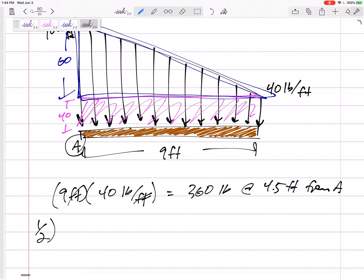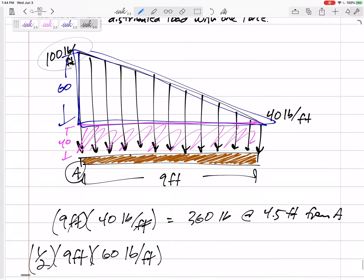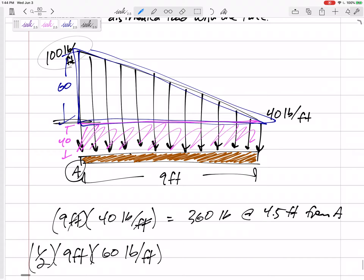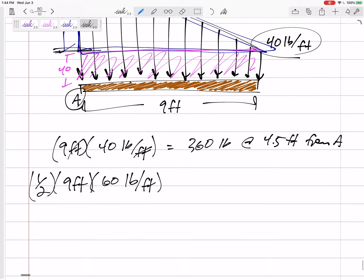The triangular distributed load, what's the area of a triangle? One half base times height. The height is only 60, right? It's sitting on top of that uniform distributed load. So make sure you don't plug in one half of base times 100. One half base times just the height of the distributed part, the difference in those 60.